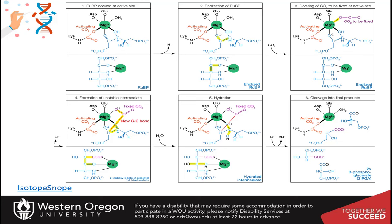This slide shows the activity of the active site of the Rubisco enzyme. You can see a molecule of magnesium is required. The magnesium is stabilized by interactions with glutamate and aspartate residues that are holding it into the binding pocket of the Rubisco site.